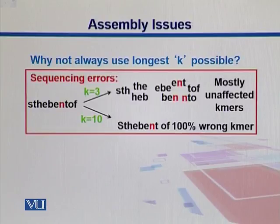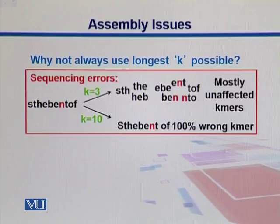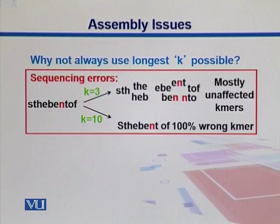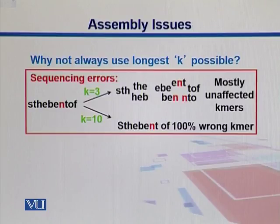Sometimes using a shorter k-mer is advantageous over using a longer k-mer. For instance, we see a read with a sequencing error shown in red — an incorrect nucleotide that has been incorporated. If we use k=3, we have small k-mers of length 3, and mostly we can have k-mers which are unaffected. If we use k=10, this error will obviously be included as a wrong k-mer, messing up our assembly. So if our k-mers are smaller, the effect of sequencing errors can be minimized.